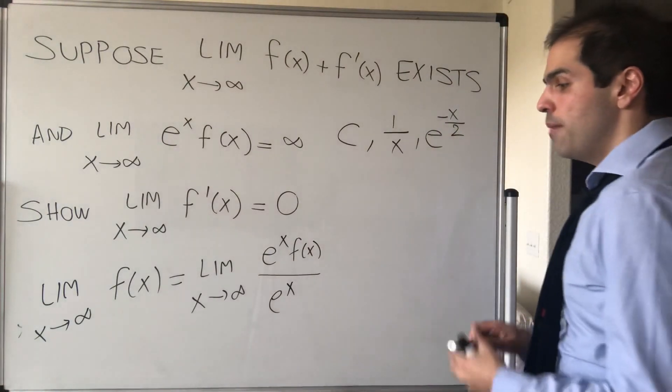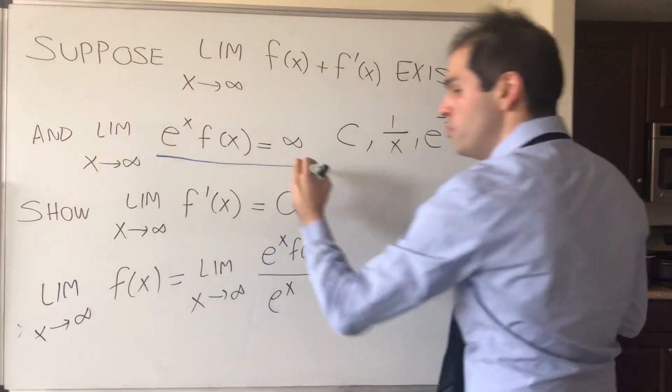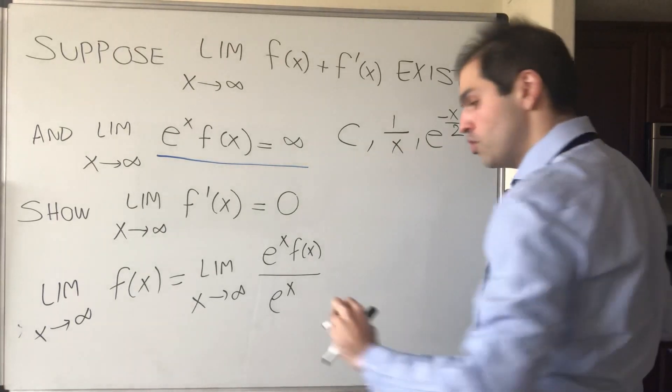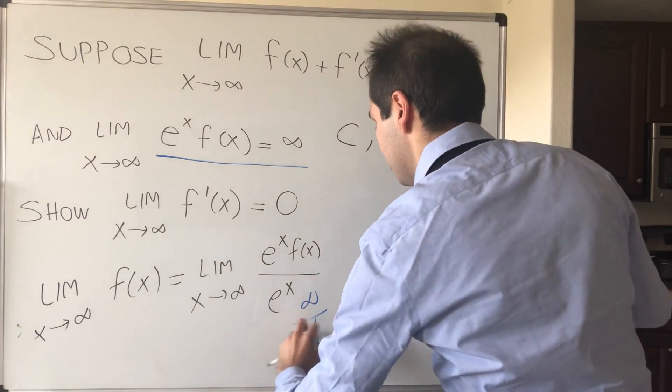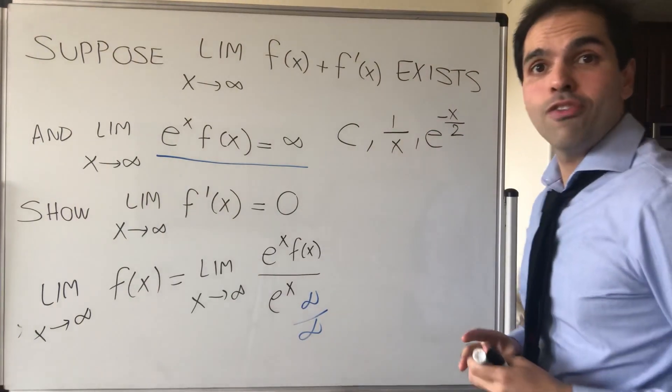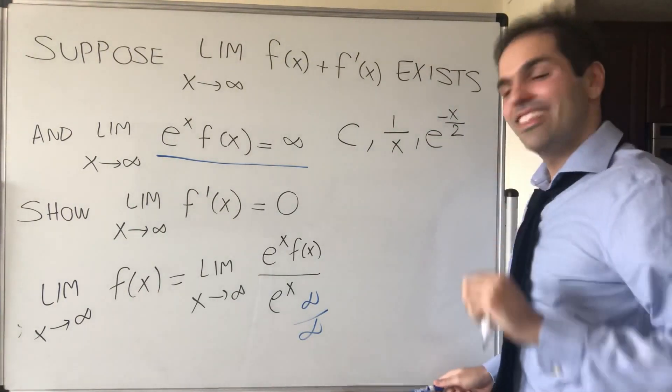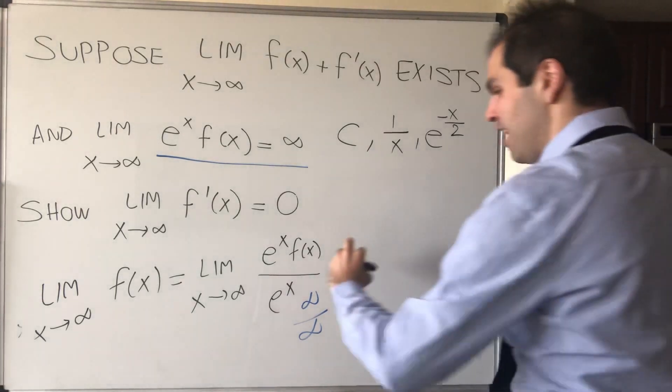But now notice, by assumption, the numerator goes to infinity, and the denominator also goes to infinity. So we have infinity over infinity, and what time is it? It's L'Hôpital's time. So by L'Hôpital's rule,